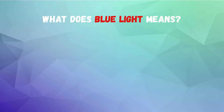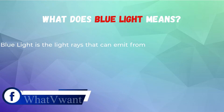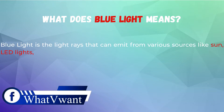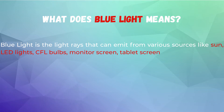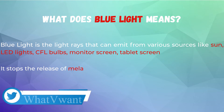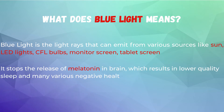Firstly, let's know what blue light means. Blue light is the light rays that can emit from various sources like the sun, LED lights, CFL bulbs, monitor screens, and tablet screens. It stops the release of melatonin in the brain, which results in lower quality sleep and many various negative health issues.